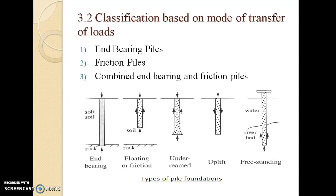Let us understand the classification based on the mode of load transfer. If the load acted upon the pile is transferred by the tip of the pile, then such a pile is called an end bearing pile. In the case of a friction pile, the pile transfers loads by skin friction alone. Such a type of pile is called a friction pile.